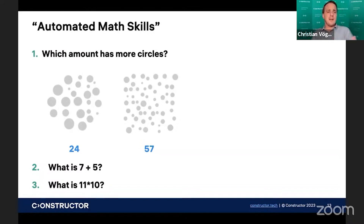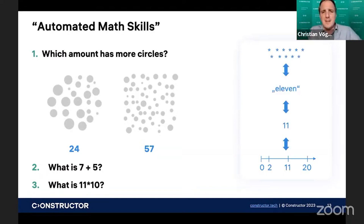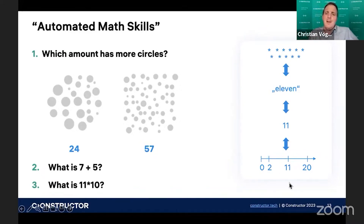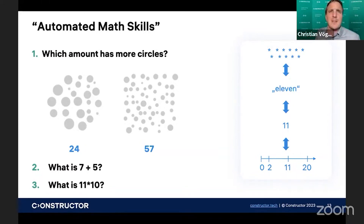So besides automating these different arithmetic functions, you also automate switching between the different representations of numbers. When I say 11, there is immediately some kind of feeling that 11 is this quantity of stars. You immediately know that 11 can be depicted as 1, 1 in digits. And you also have an immediate understanding that 11 is slightly larger than 10 but smaller than 20. As experienced math doers, you immediately know how to place 11 on the number line and how to relate it to other numbers.